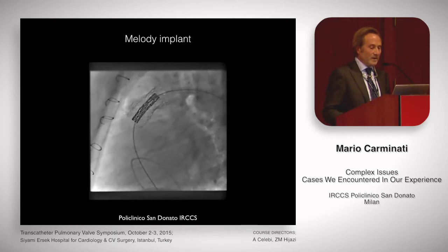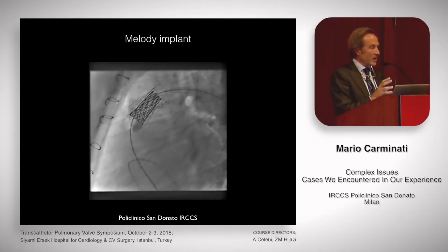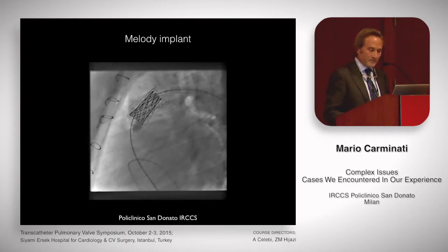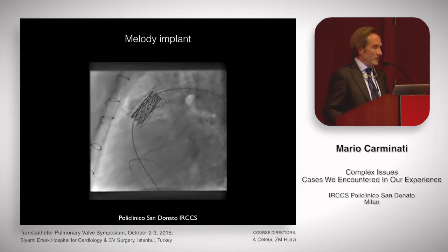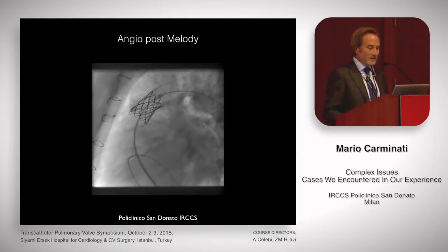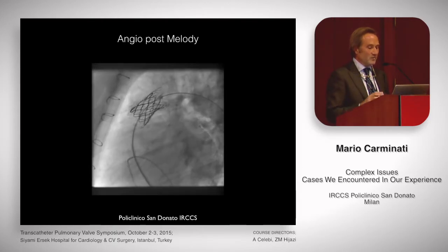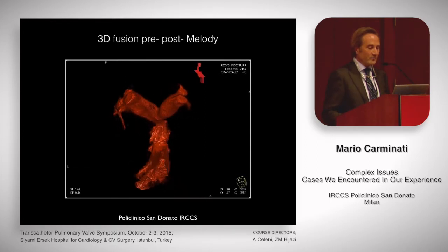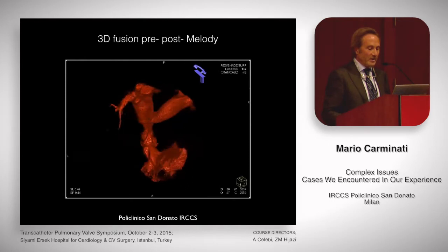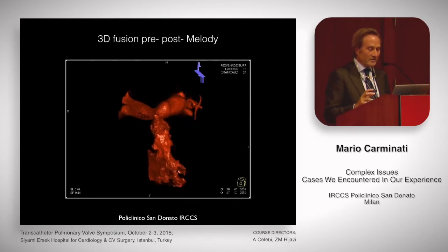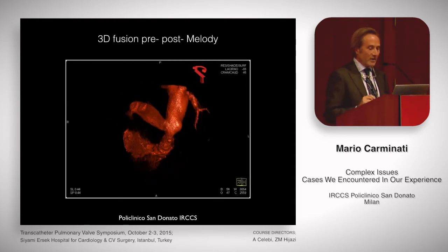Then we decided to implant a second stent more proximal, because there was a significant stenosis at the RV-to-PA conduit junction. Another understent was implanted there, and then eventually the Melody was implanted — it was of course the easiest part of the procedure. Pre-stenting and achieving a good landing zone is a key issue for achieving good results. The angiogram immediately afterwards showed no regurgitation at all, no stenosis, nice flow, symmetrical distribution to both pulmonary branches. That's the 3D fusion from the 3D rotational angiogram — pre-stent implantation, and then fusion imaging with the Melody implanted, with a perfectly positioned stent and excellent reconstruction of the right ventricular outflow tract.